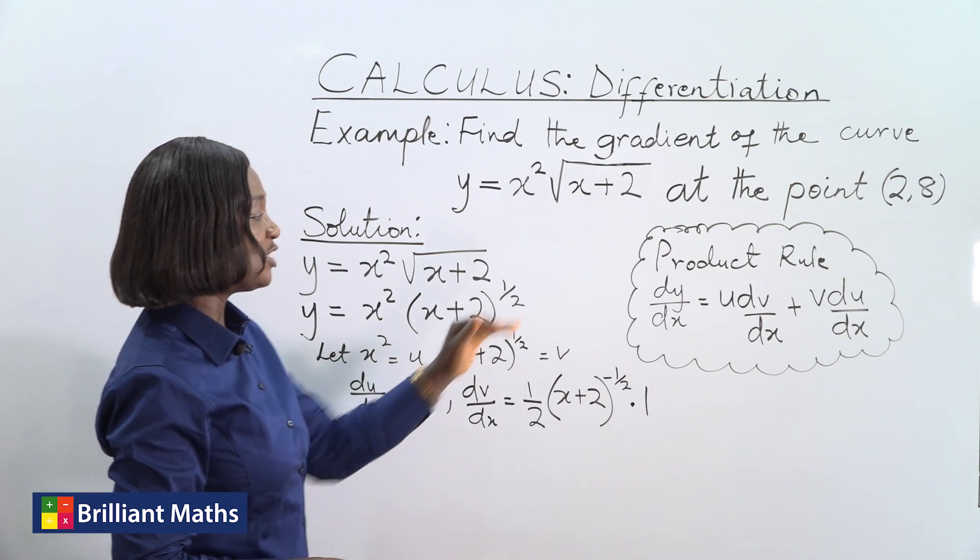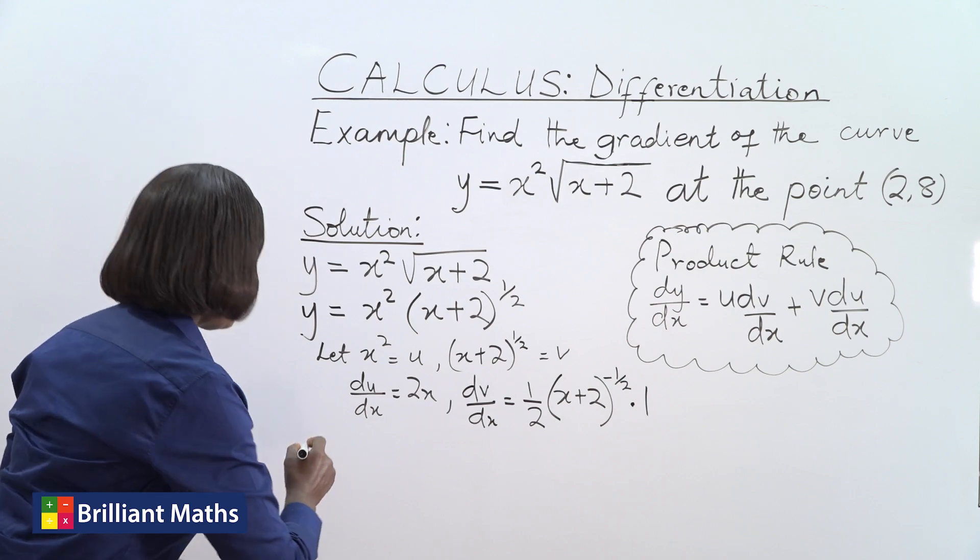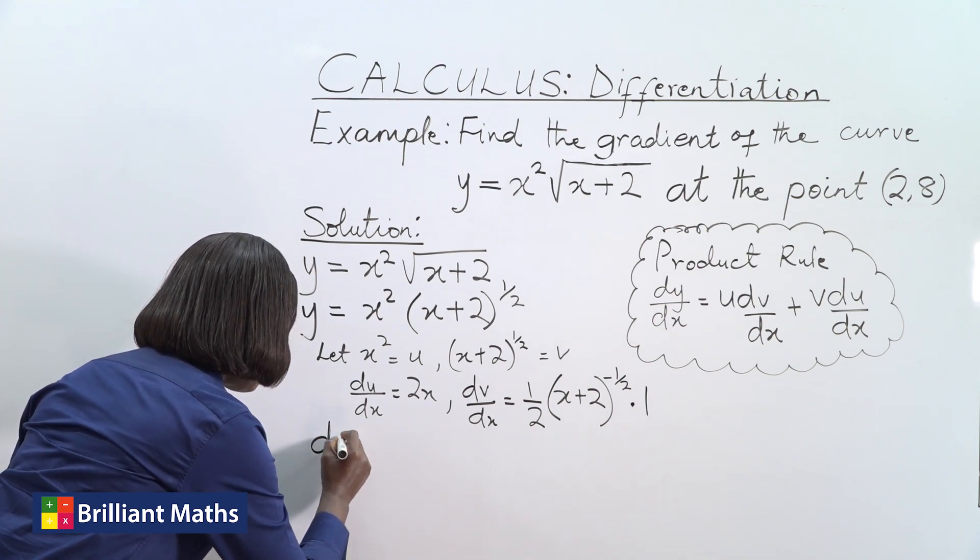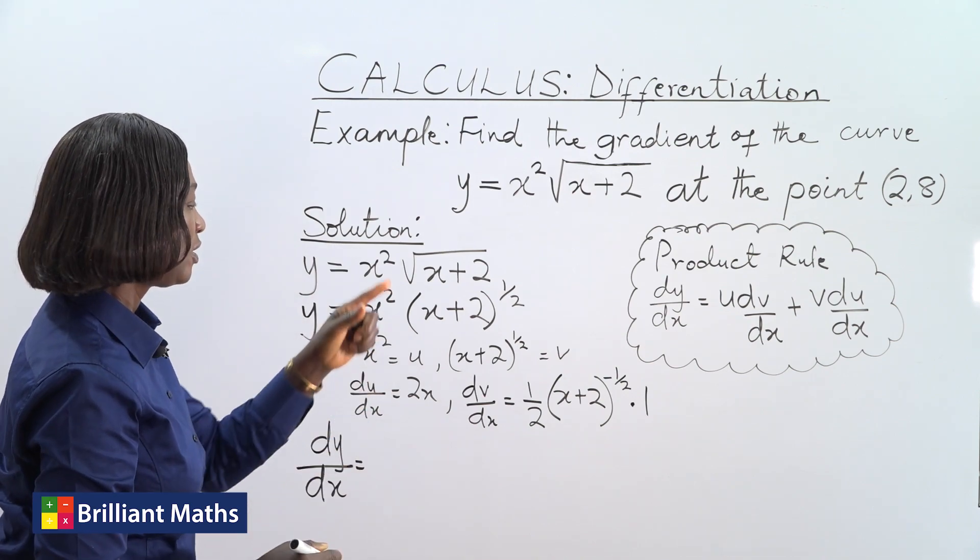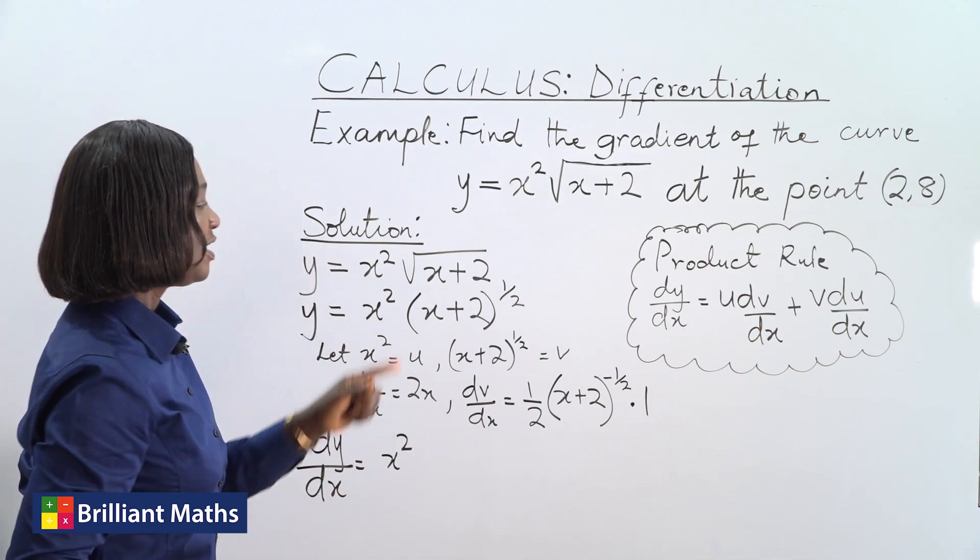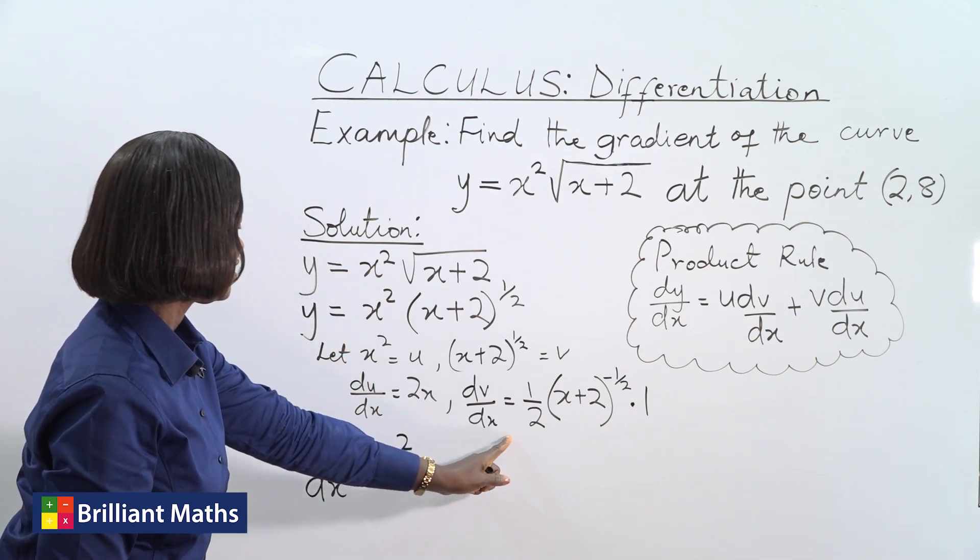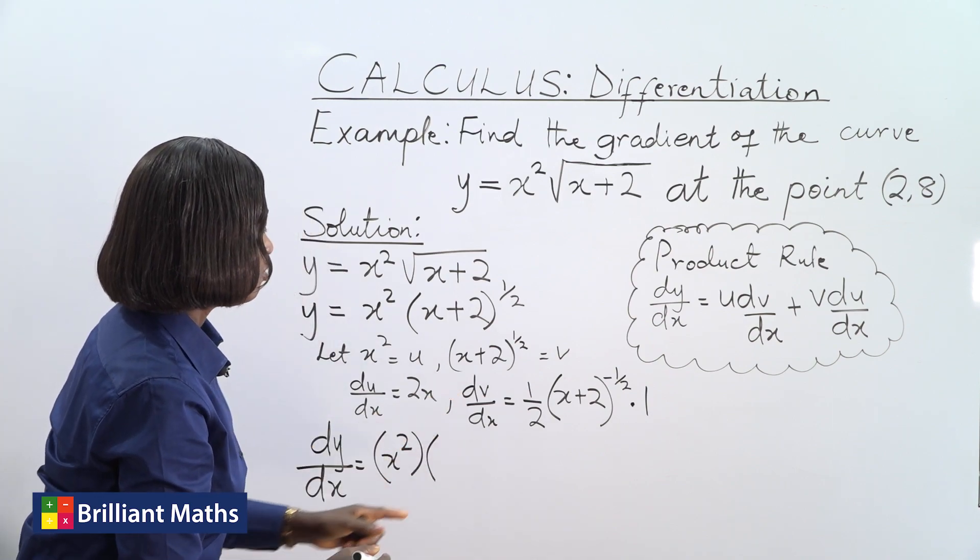So we're putting it into that formula to be able to get the derivative. So dy/dx is equal to u times dv/dx. Let's use brackets to show the multiplication.